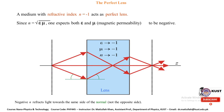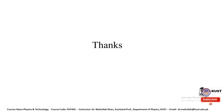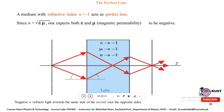A perfect lens is also possible for a medium with a negative refractive index. Negative refractive index refracts light toward the same side of the normal, not the opposite side. This concludes the discussion on plasmonics and its various interesting applications, some of which are already commercialized and others that will be commercialized in the future.